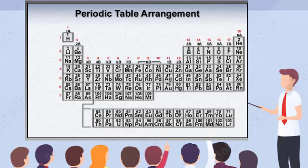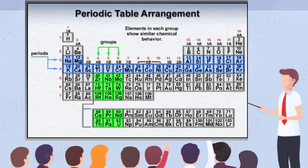The periodic table arranges elements into a series of vertical columns called groups, and horizontal rows called periods. As Mendeleev noted, elements in each group show similar chemical behavior. The shape and length of the periods have significance as well. You'll learn about the groups in the periodic table and what they signify, then you will learn about the periods.